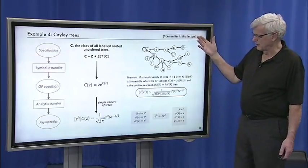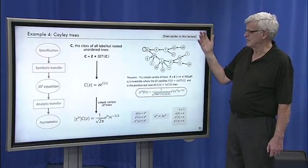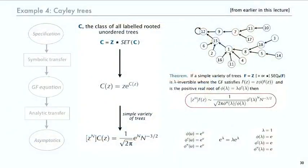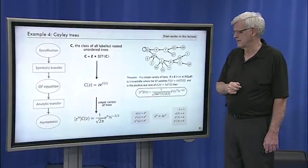So this is from earlier in this lecture, we just did this one. That's Cayley trees, labeled ordered trees. We went from the construction to the generating function. And then when it's a simple variety of trees, we went immediately to the coefficient asymptotics. That was our last example of a simple variety of trees. It's exactly this class C.